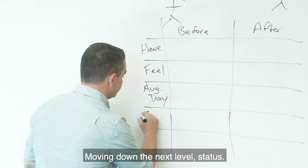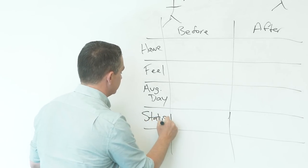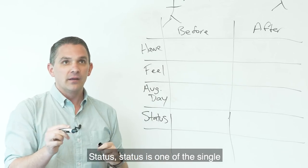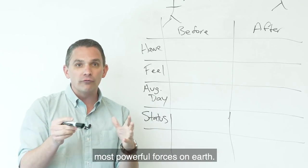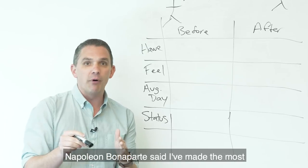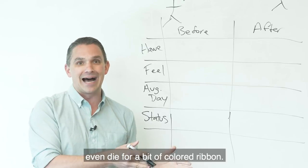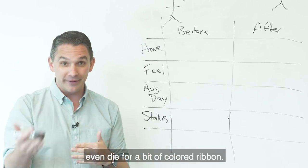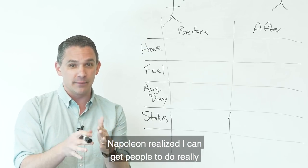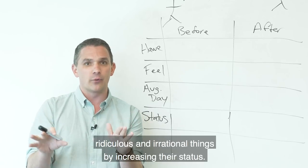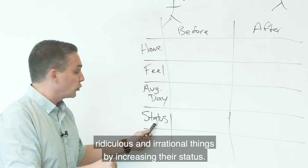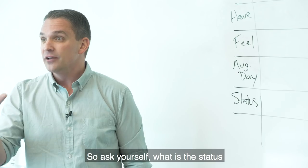Moving down the next level, status. Status is one of the single most powerful forces on earth. Napoleon Bonaparte said, I've made the most wonderful discovery. Men will fight long, hard, even die for a bit of colored ribbon. Napoleon realized I can get people to do really ridiculous and irrational things by increasing their status.